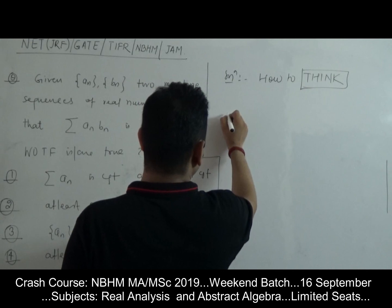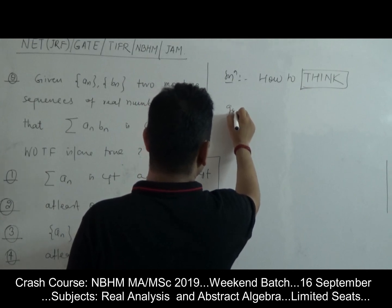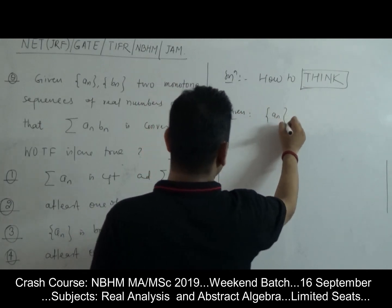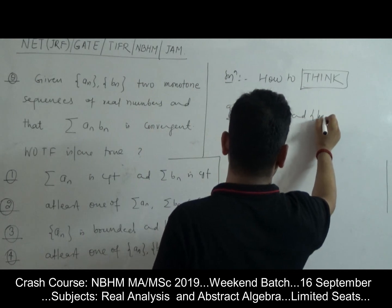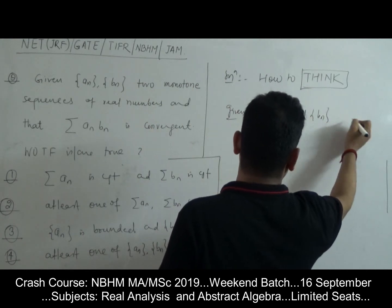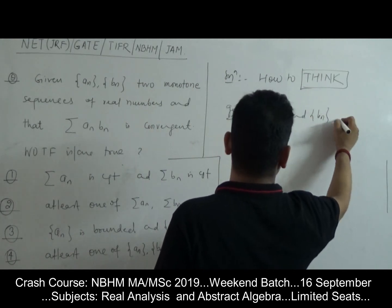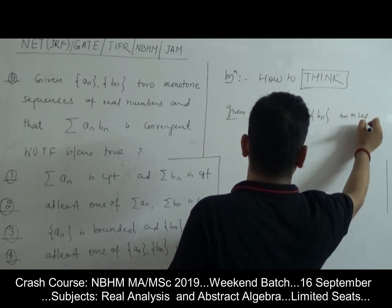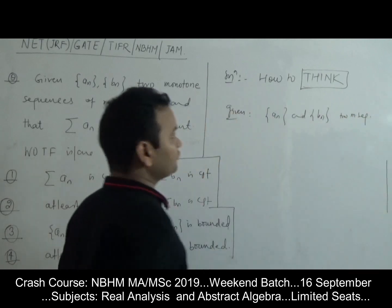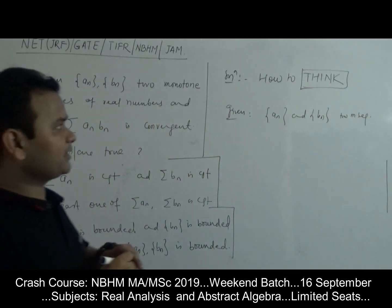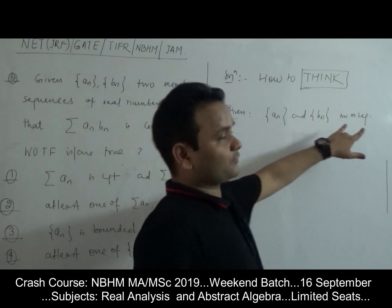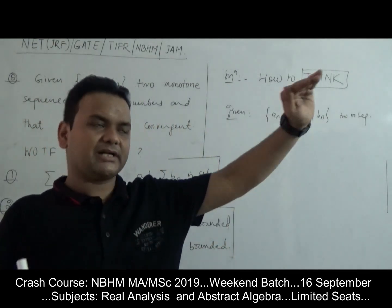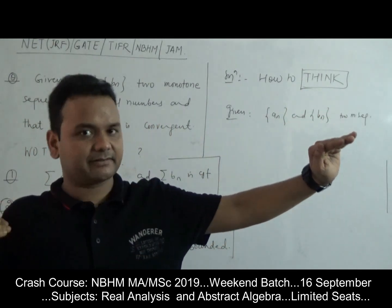So what is given? The given information is that A_n and B_n are two monotone sequences. These are two monotone sequences, so first you should know what is meant by a monotone sequence.